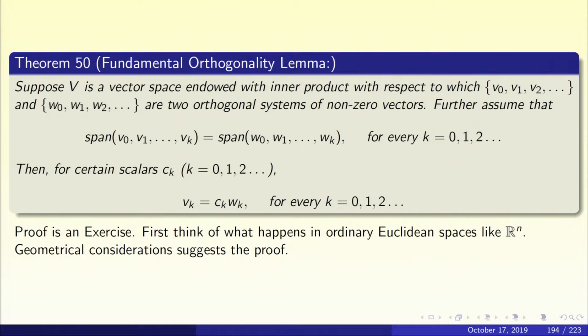Let us see what happens when k is 0. What does it read? Span of V0 equals span of W0. It really means V0 must be a multiple of W0 — a non-zero multiple because both vectors are non-zero. So V0 equals C0 times W0. That we have verified. Let us now take k equal to 1. The hypothesis reads: linear span of V0, V1 is the same as the linear span of W0, W1.